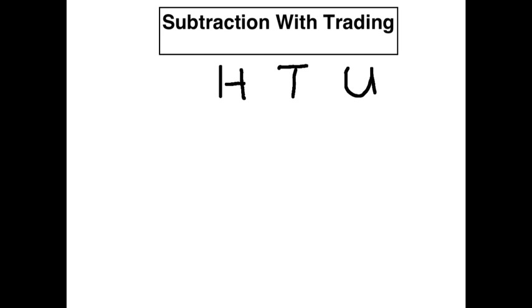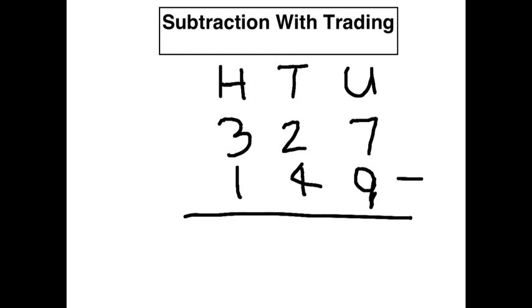We had 327 minus 149. As Sarah showed us, we can't take the 9 away from 7, because 9 is a much bigger number than 7. So we have to, as we showed on the video, we need to trade from here. And this is how we do it on paper.